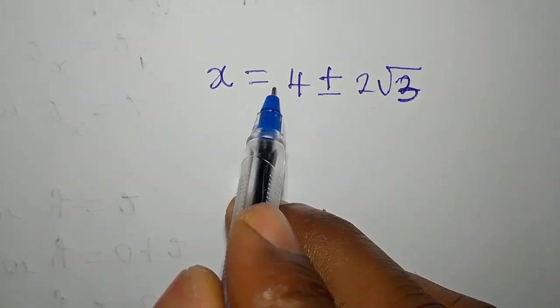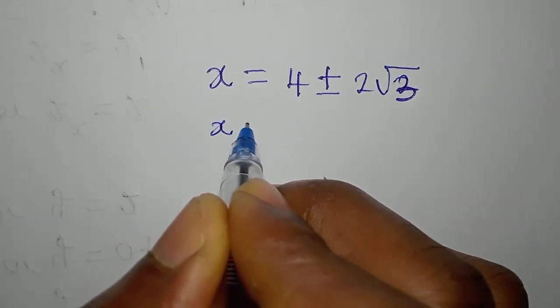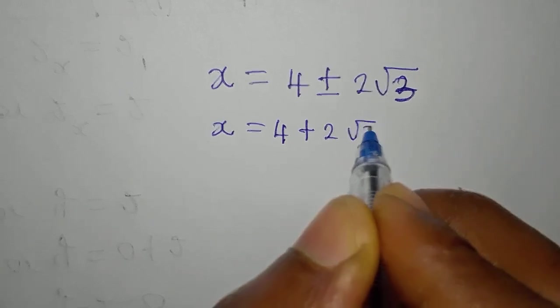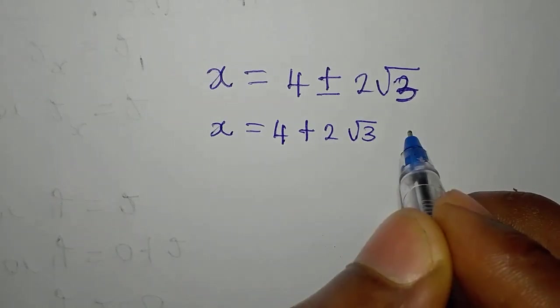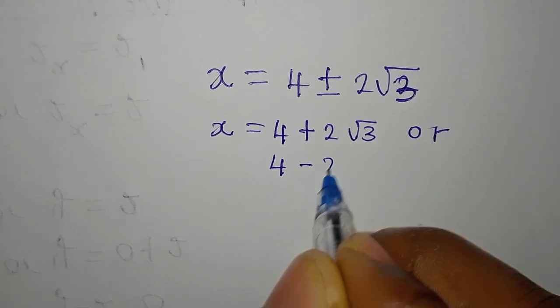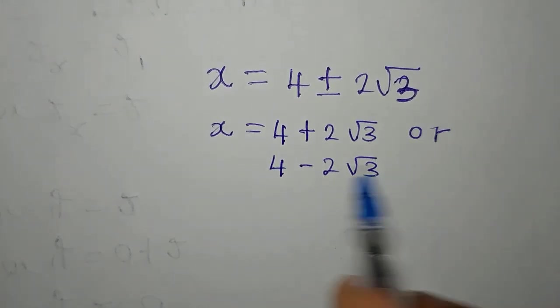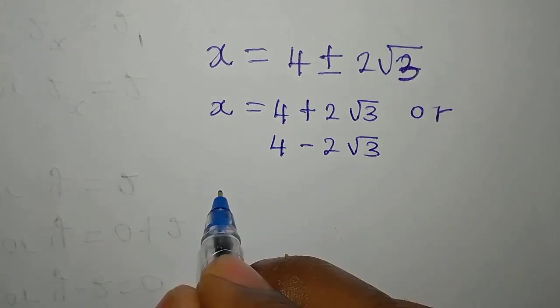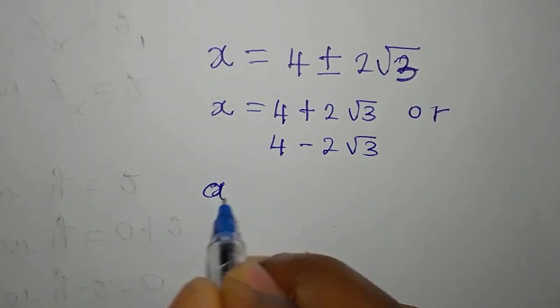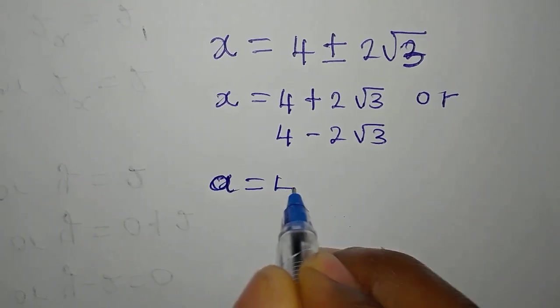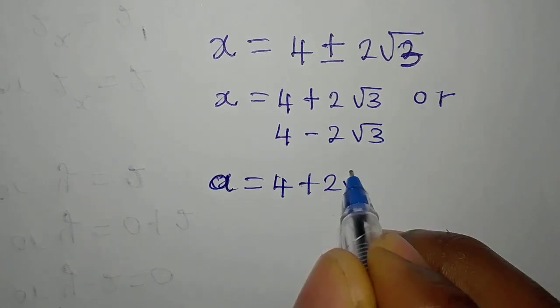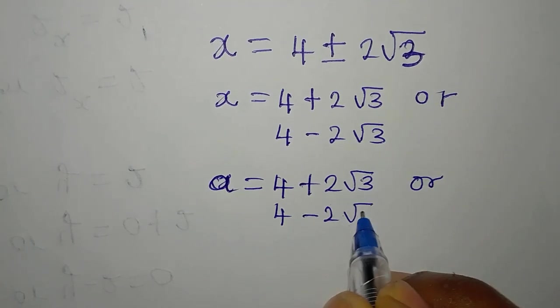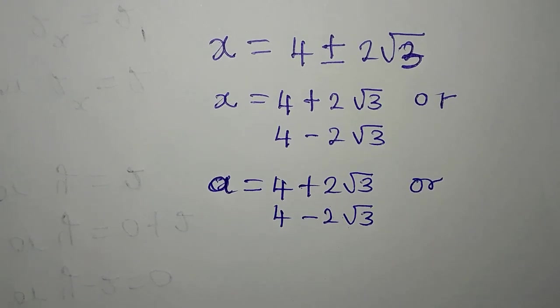So this is what we have, meaning that X is equal to 4 plus 2 root 3, or we have 4 minus 2 root 3. So we have the two solutions. Mind you that this X is for the A. So our A now is 4 plus 2 root 3 or 4 minus 2 root 3.